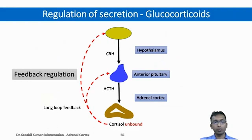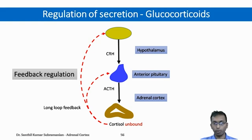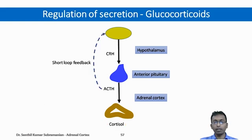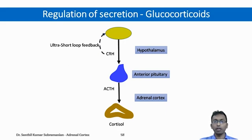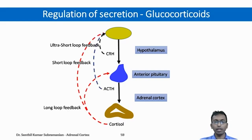The next regulation is through feedback regulation. The unbound cortisol — as noted, the bound form does not participate in feedback — will inhibit the secretion of ACTH by acting on the anterior pituitary, or it can directly act on the hypothalamus to decrease CRH secretion. In the short-loop feedback, ACTH can act on the hypothalamus to reduce CRH secretion. In the ultra-short-loop feedback, the CRH secreted from the hypothalamus acts on the cells that secreted it to reduce CRH levels. So there are three levels of feedback regulation to control cortisol secretion.